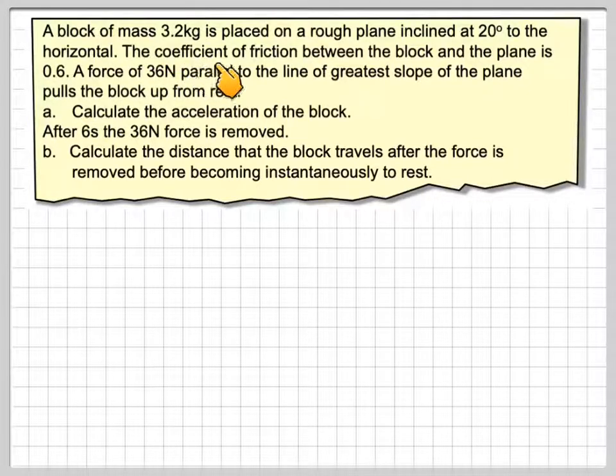A block of mass 3.2 kg is placed on a rough plane inclined at 20 degrees to the horizontal. The coefficient of friction between the block and the plane is 0.6. A force of 36N parallel to the line of the greatest slope of the plane pulls the block up from rest.